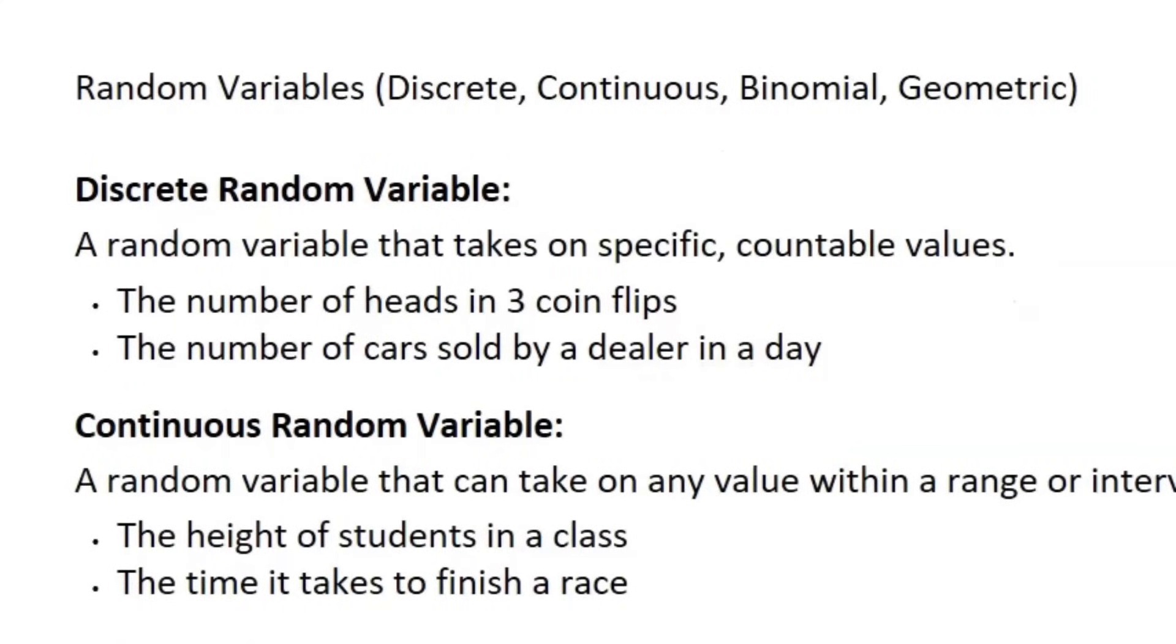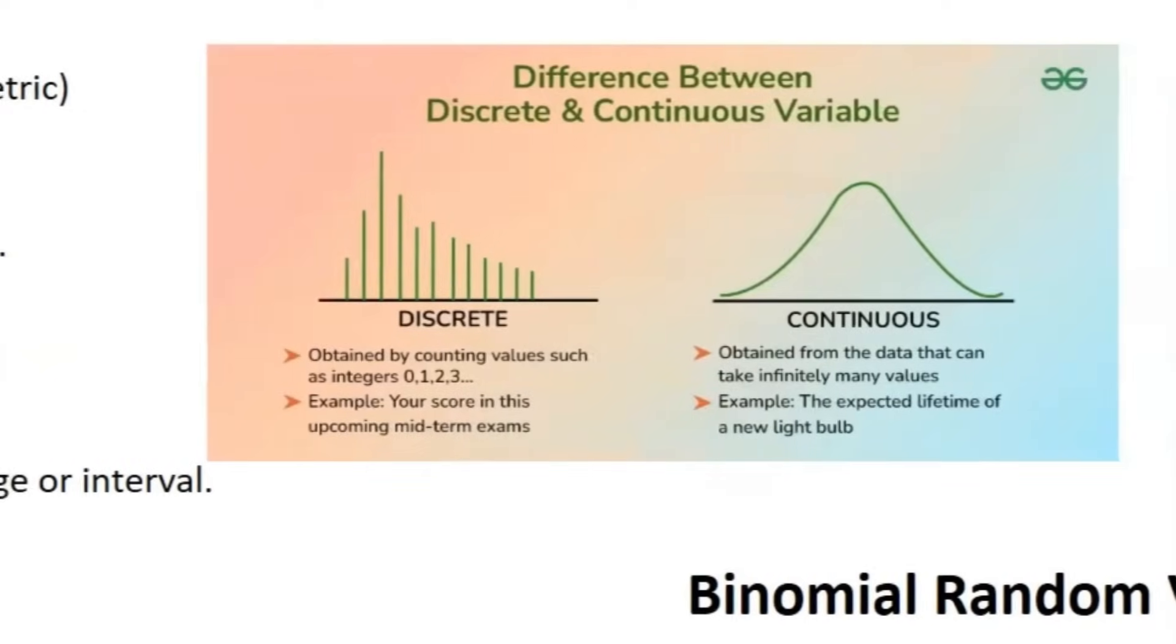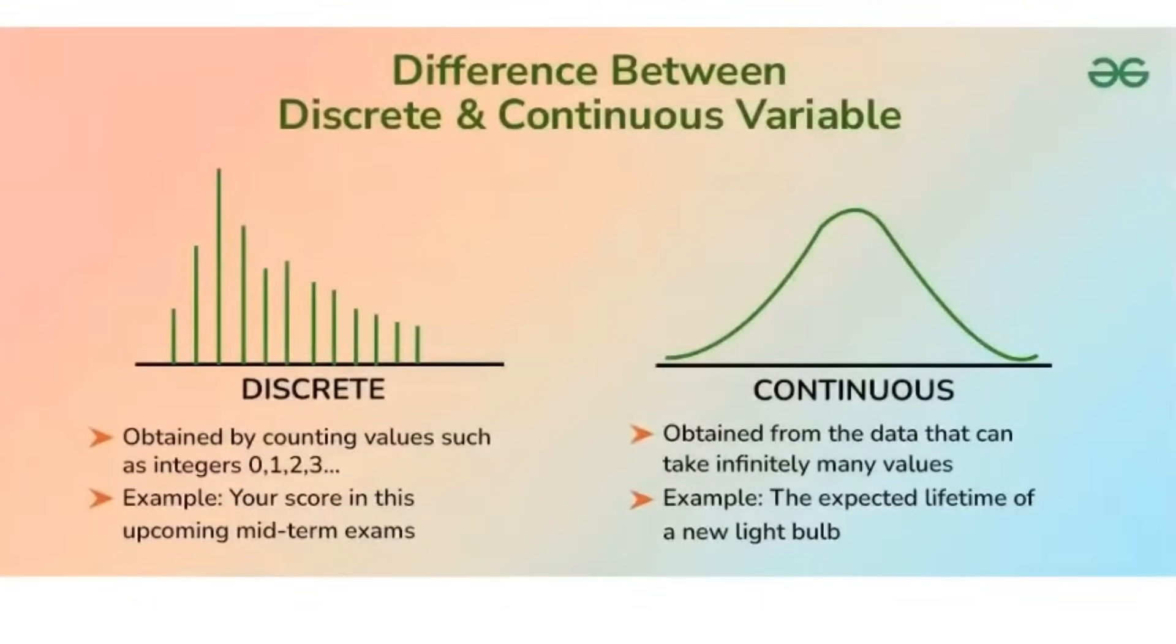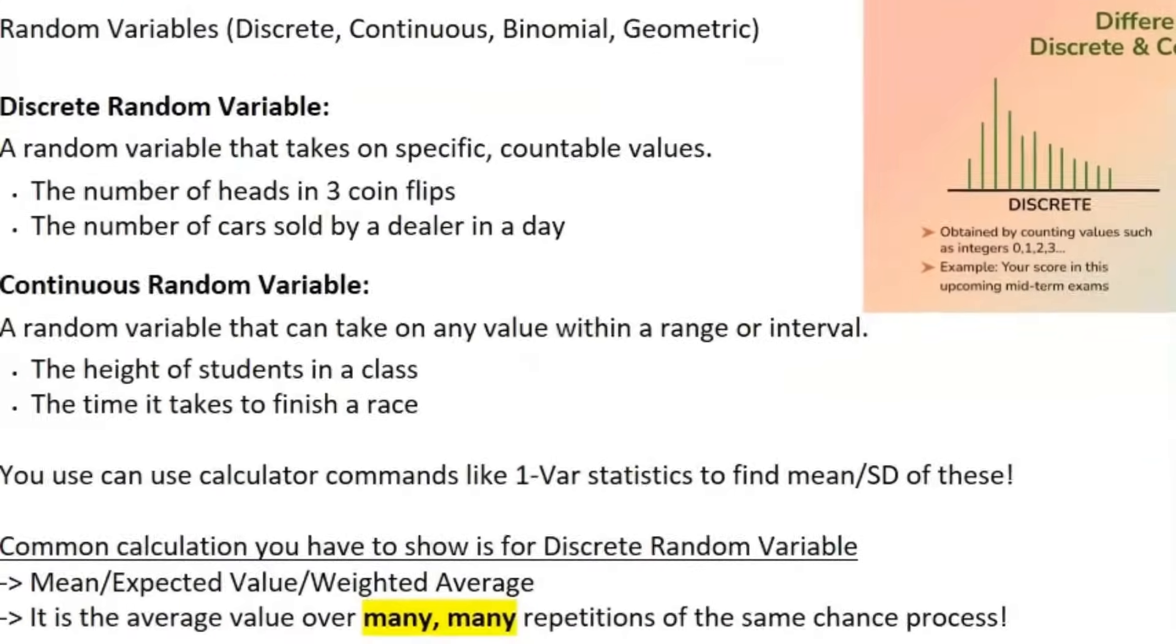Now, when you have a continuous random variable, that means it's any value within a range or interval. So it's not just one, two, three. You actually count what's in between one and two. It's continuous. It's everything in between as well. So think about the height of students in a class. So if you think about heights, it's not just you can be one inch or two inches. Obviously, that's super short, but you can be everything in between. Also, the time it takes to finish a race. It's incremental. It's not just finishing a race in one second or two seconds. It's also you can be like one point one one one one. You get the point. And here is another diagram just to show the difference between discrete and continuous variables.